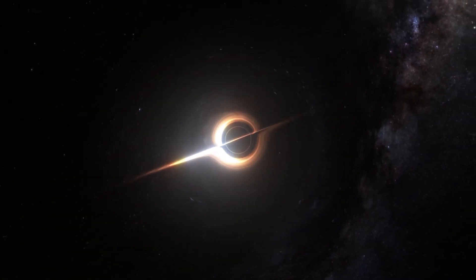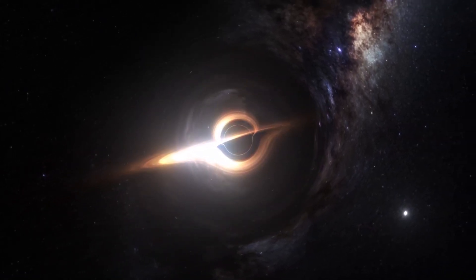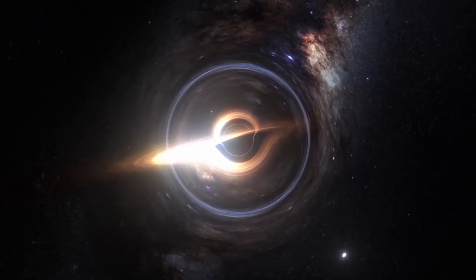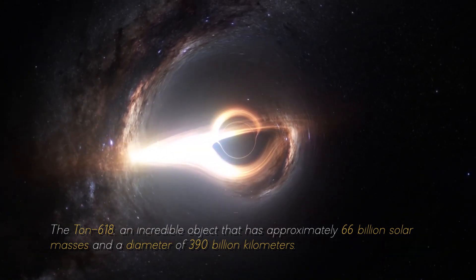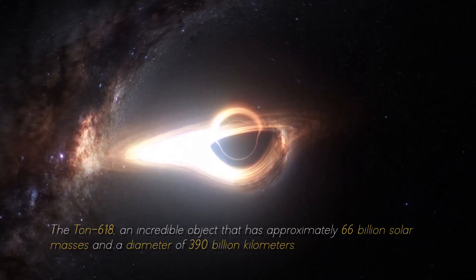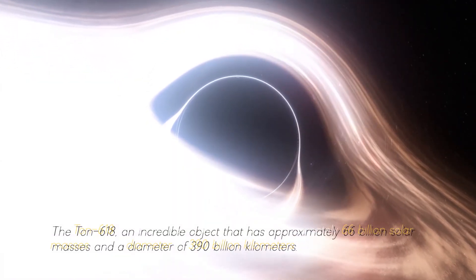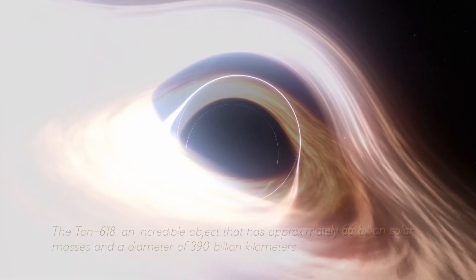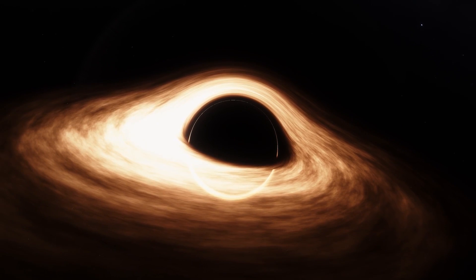Not everything ends here. This star cannot be compared with the most massive black hole in our cosmos, the Ton 618, an incredible object that has approximately 600 billion solar masses and a diameter of 390 billion kilometers. For now, we will stop measuring in kilometers and start measuring in light years.